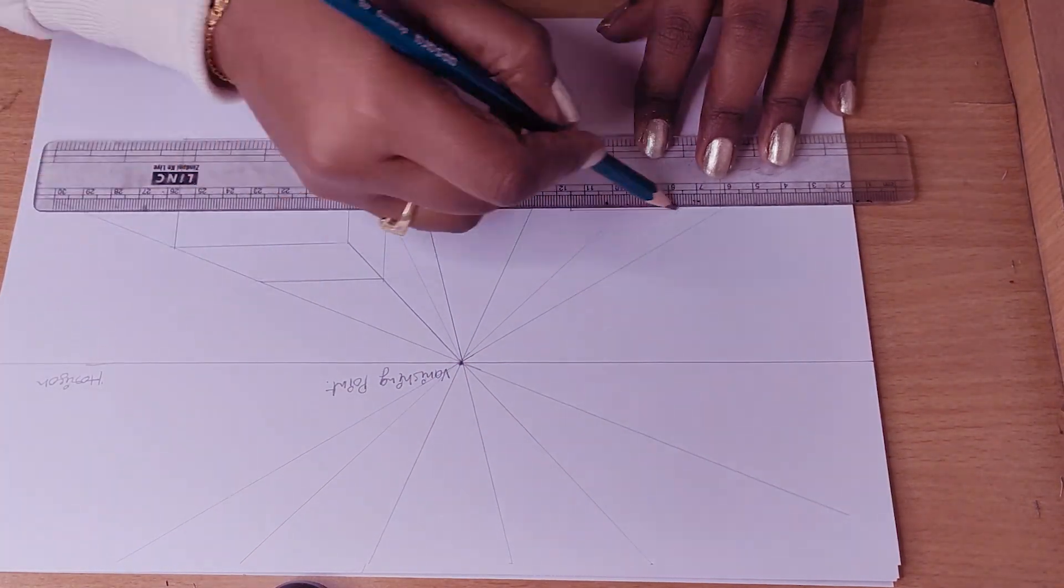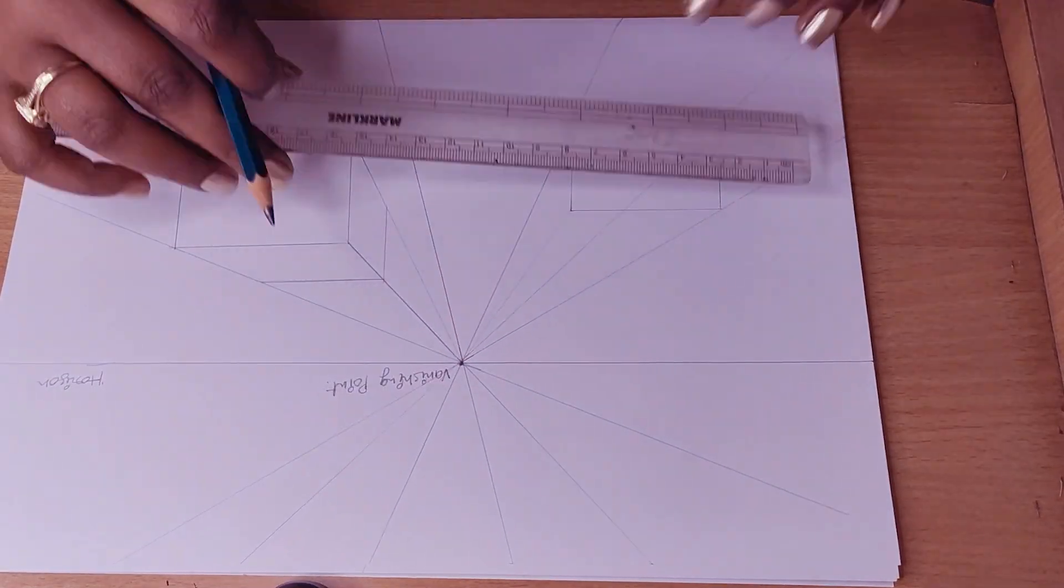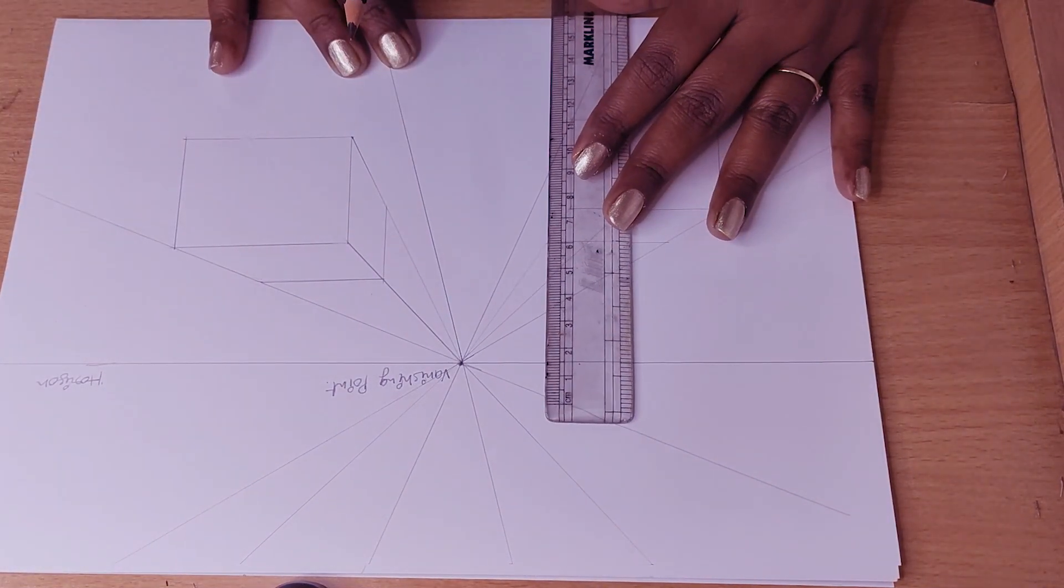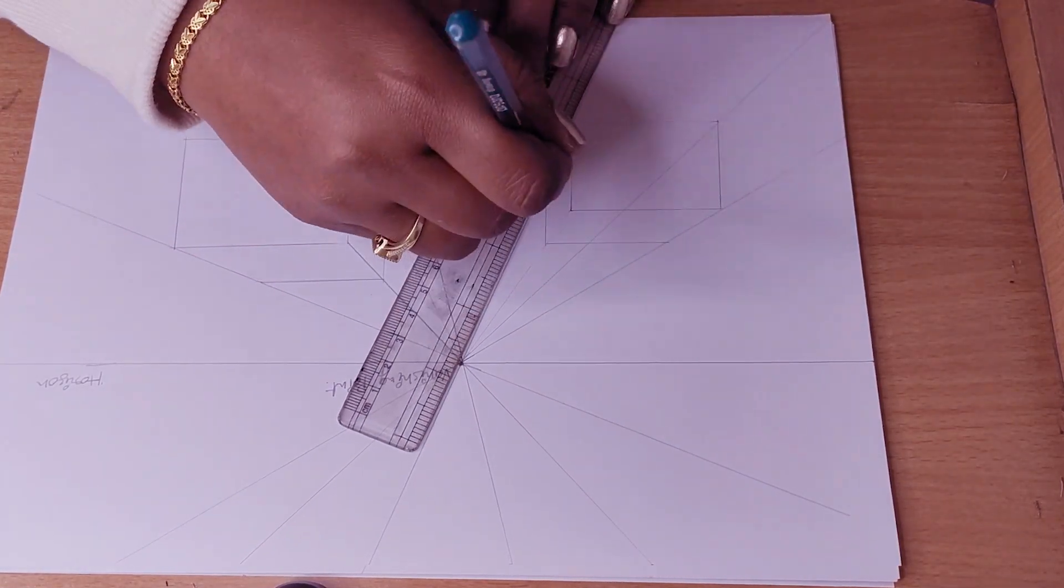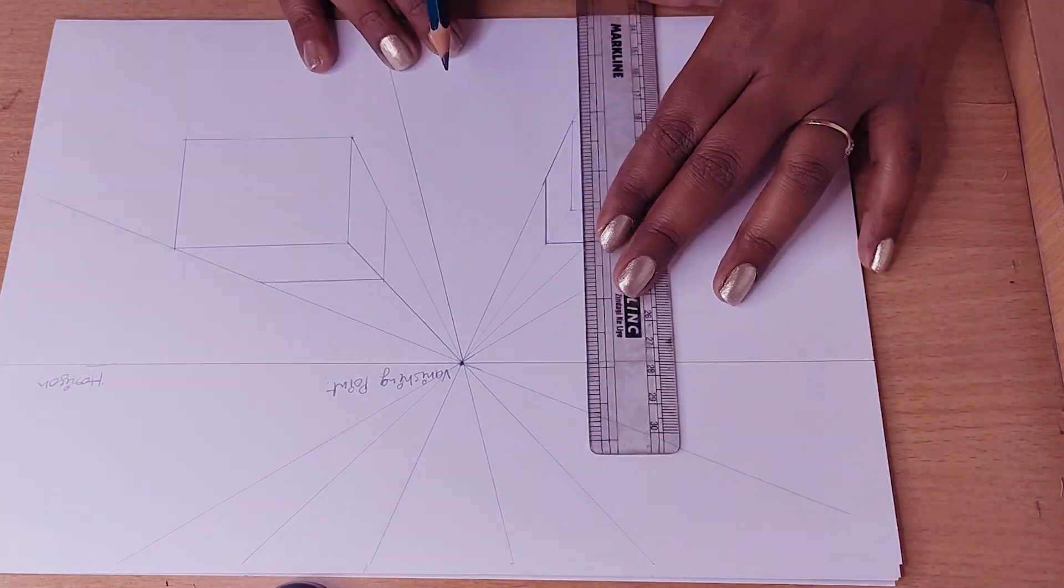Hello everyone, my name is Pratiba, and today I am going to talk all about perspective. There are various kinds of perspective, like one-point perspective, two-point perspective, three-point perspective, cavalier, and so on. This video is all about one-point perspective.